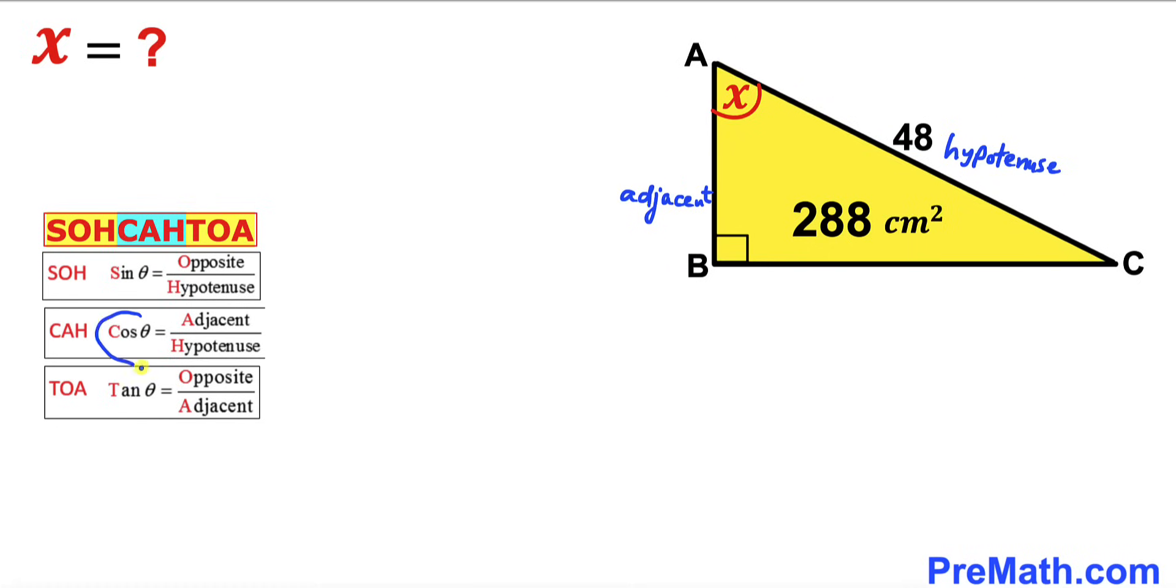Therefore, cosine equals adjacent divided by hypotenuse could be written in terms of this angle X as cosine of X equals adjacent, which in our case is side length AB, divided by hypotenuse, which is 48.